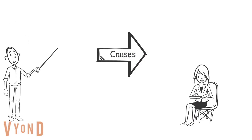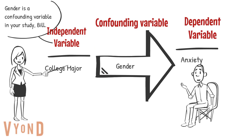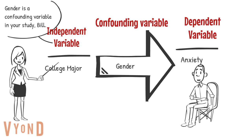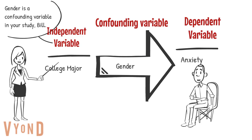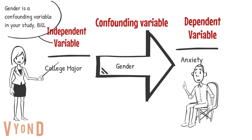Bill does not recognize this and presents his findings to Dr. Smith, explaining that his independent variable — college major — is causing a change in his dependent variable — anxiety — specifically that engineering majors reported more anxiety than psychology majors. Dr. Smith explains that his findings don't show that being an engineering major causes more anxiety; rather, the different proportion of males in his engineering sample likely explains the difference. When a third variable explains the relationship between the independent and dependent variables, that is called a confounding variable — which was the case with gender in Bill's study.